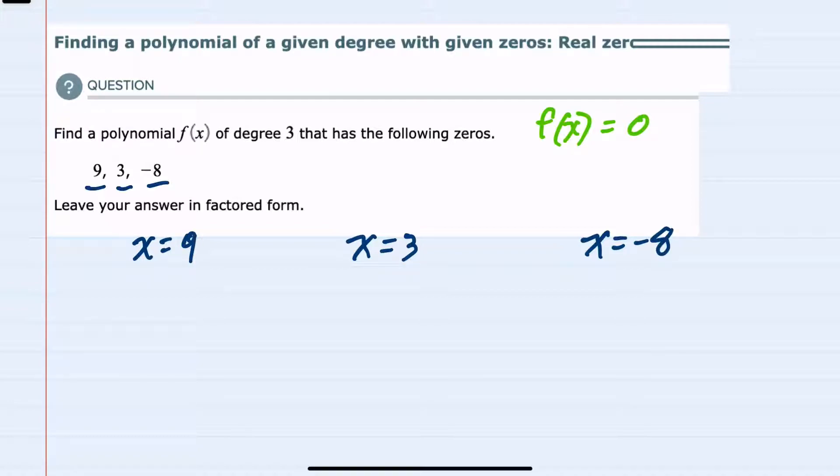So these are our three zeros and the zeros occur when the function f of x equals 0. To find the factors I would like to rewrite each one of these solutions as being equal to 0. So instead of isolating the x's as they are now I want to move everything to one side leaving 0 on the other side.